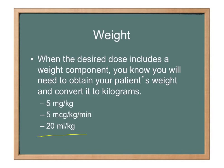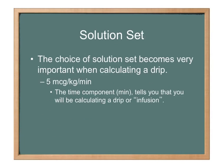All of these are different examples: 5 mg per kg, 5 micrograms per kg per minute, or 20 mL per kg — that would be a volume dose. The choice of solution set becomes very important when calculating a drip. The time component — per minute — tells you that you will be calculating a drip or an infusion. When you see per kg, that means it's a weight-based dose. When you see per minute, that means it's going to be a drip or an infusion, and you're going to have to calculate drops per minute.